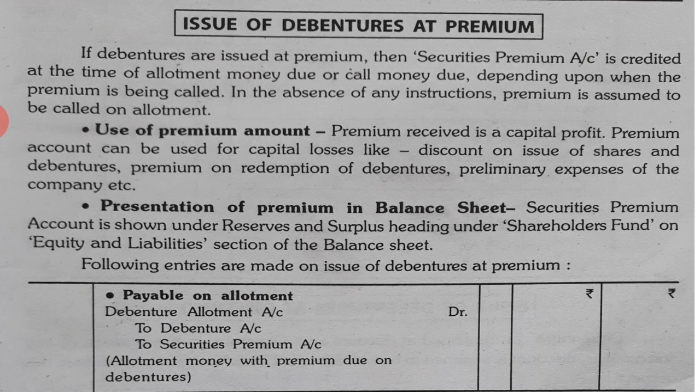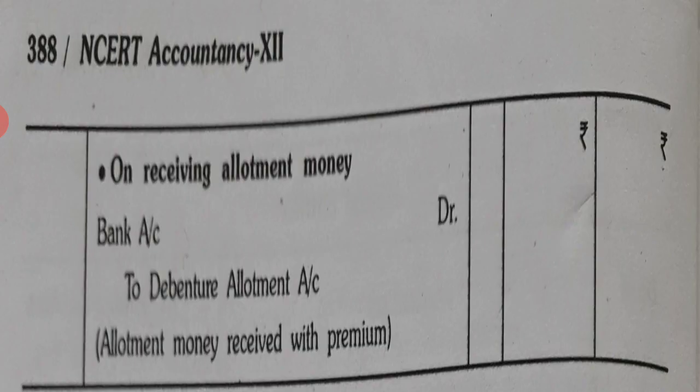So what entries are made? First, if Security Premium is payable on Allotment, then Debentures Allotment Account is debited to Debentures Account and to Security Premium Account. When Allotment Money is received, money comes into the Bank, therefore Bank Account is debited and Debentures Allotment Account is closed by crediting it. So these two entries are done in this regard.